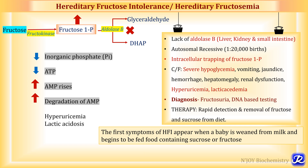As seen previously, fructose metabolism is associated with increased uric acid and lactic acid levels because increased fructose 1-phosphate causes trapping of inorganic phosphate, leading to decreased inorganic phosphate, which in turn decreases ATP concentration. As a compensation there is increased AMP formation, leading to more AMP degradation — more purine synthesis and more purine degradation — so uric acid, the end product of purine metabolism, accumulates, causing hyperuricemia.